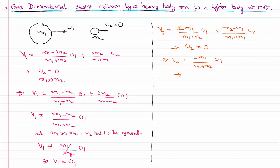Now applying the other condition that m1 is very much greater than m2 — we ignore the m2 term in the denominator. So v2 ≈ 2m1/m1, and m1 cancels. Therefore, v2 is approximately equal to 2u1. The velocity of the second body after the one-dimensional elastic collision is close to double the initial velocity of the first body.